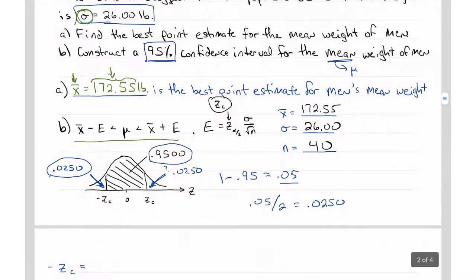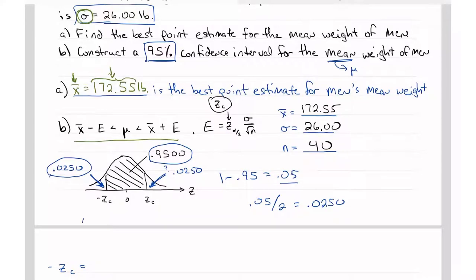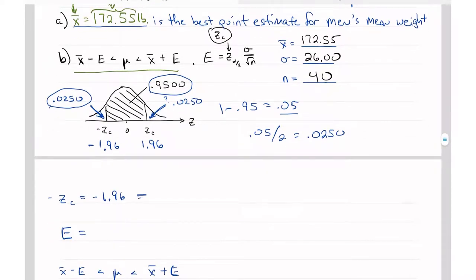So this is negative 1.96. That means Z sub C is positive 1.96. Z sub C will always be positive. Negative Z sub C, 1.96, tells me that Z sub C equals a positive 1.96.